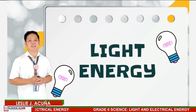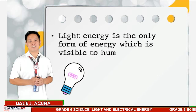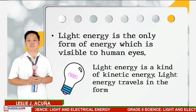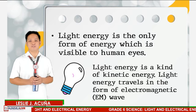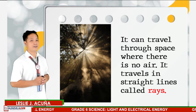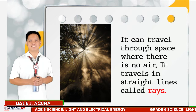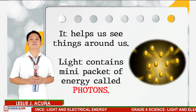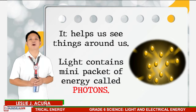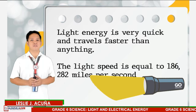Light energy is the only form of energy which is visible to human eyes. It is a kind of kinetic energy. Light energy travels in the form of electromagnetic waves. It can travel through space where there is no air. It travels in straight-line called rays. It helps us see things around us. Light contains many pockets of energy called photons.